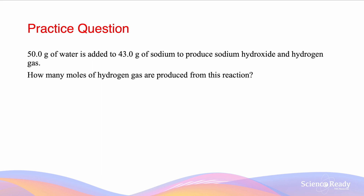In this video we will be working on how to calculate limiting reagent questions. For this first calculation, 50.0 grams of water is added to 43.0 grams of sodium to produce sodium hydroxide and hydrogen gas. How many molecules of hydrogen gas are produced from this reaction?